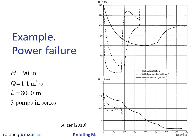This slide shows an example of the evolution of pressure and flow rate due to a power failure. When protective measures are applied, like a flywheel or an air chamber, the effect of water hammer is strongly alleviated.